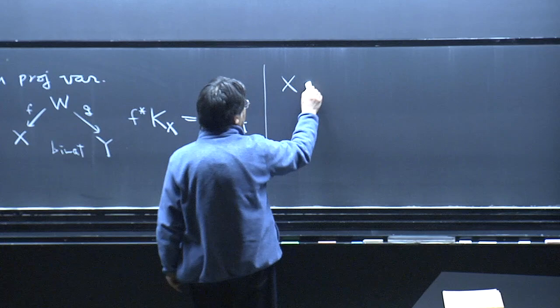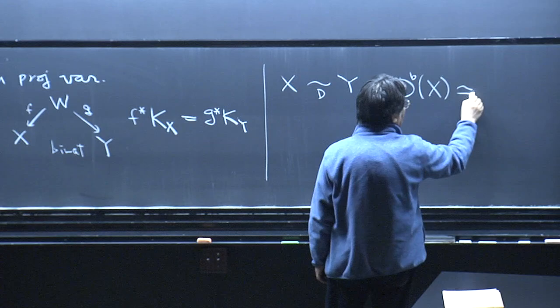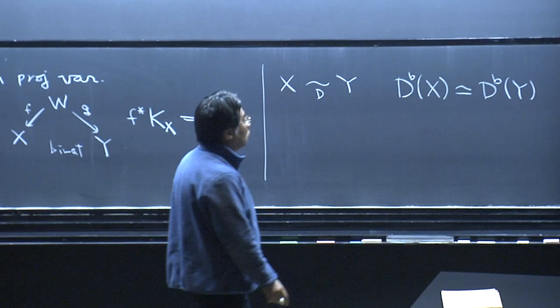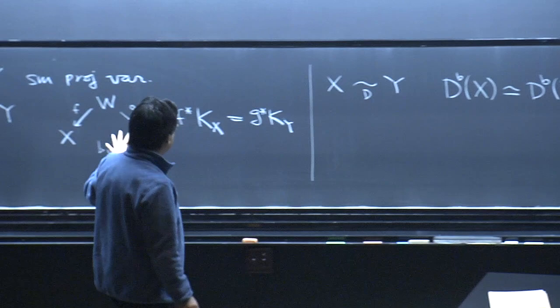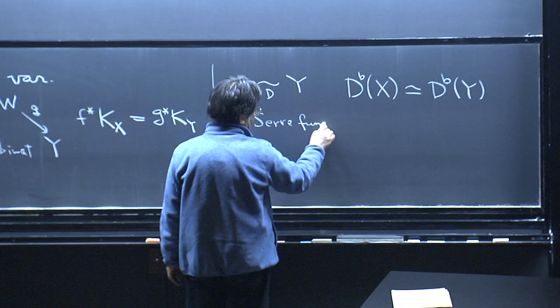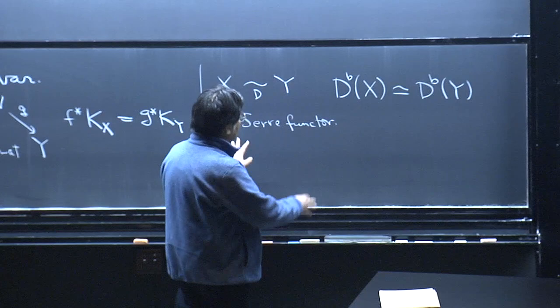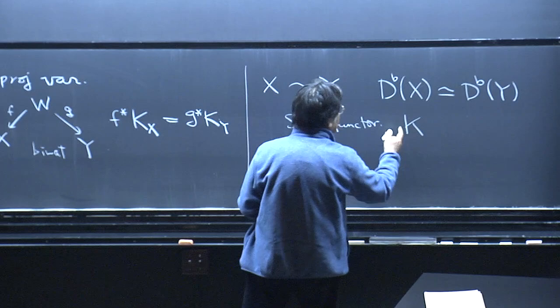D-equivalence is defined as follows: the bounded derived category of coherent sheaves on X is equivalent to the one on Y. These two equivalences are closely related because there is a Serre functor in the derived category given by Serre duality, which is an important invariant of the category and is related to the canonical divisor. In this way, D-equivalence and K-equivalence are very closely related.